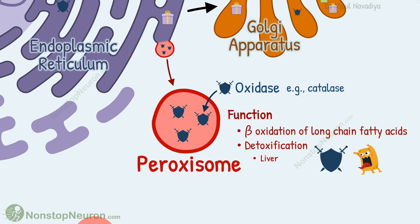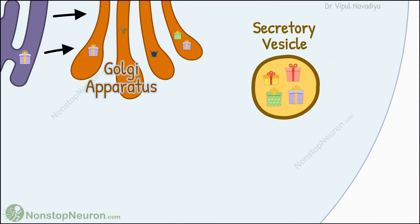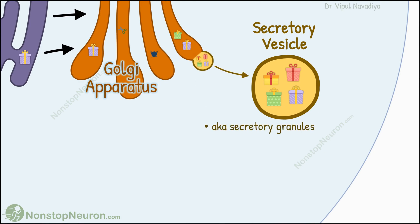Now let's see the last organelle, the secretory vesicles. They are formed by breaking off from the Golgi apparatus. They are also called secretory granules. They store the substances that are to be released out of the cell.